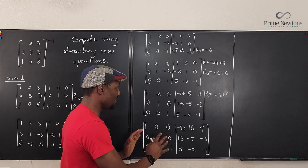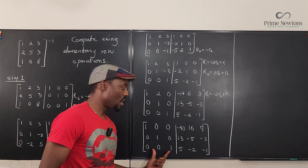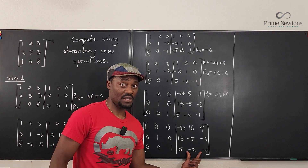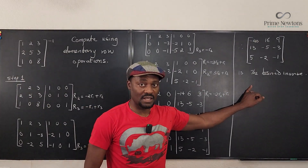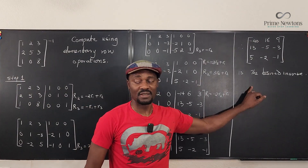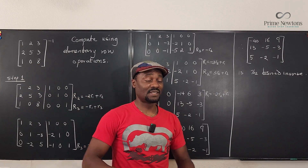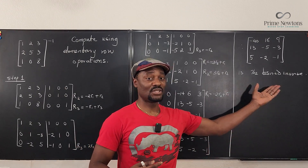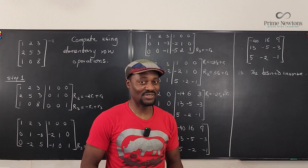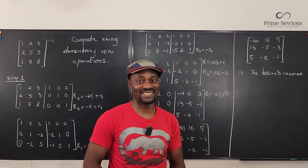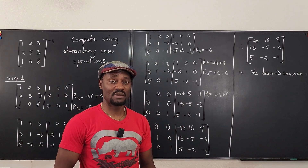We have now generated the identity matrix for 3x3 on the left-hand side. Automatically, if all your work is correct, the right-hand side is the inverse of the original matrix. Most of the time the entries will be fractions — you have to be ready to deal with fractions. See you in the next video. Never stop learning. Those who stop learning have stopped living. Bye-bye.